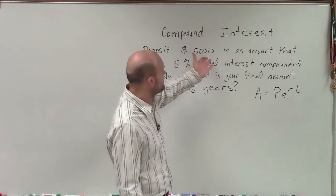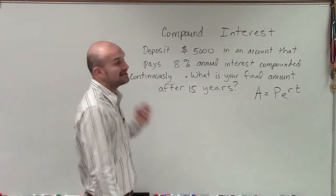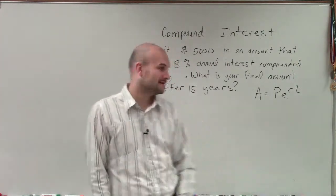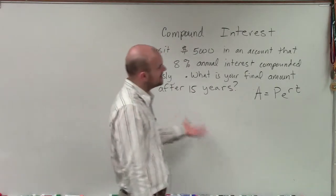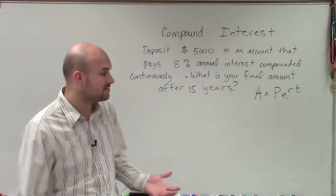But now, we're having to deposit $5,000 in an account that pays 8% annual interest. But now it's going to be compounded continuously. And when it's compounded continuously, that's going to bring in our lovely number e. And it's also going to change our formula a little bit.